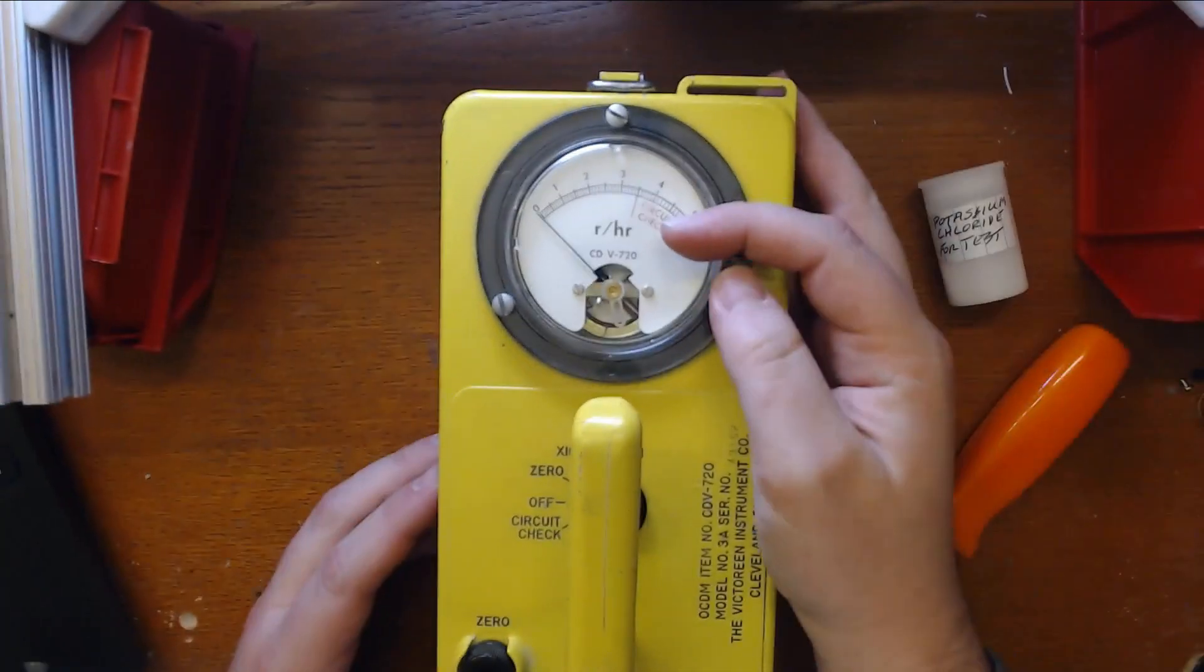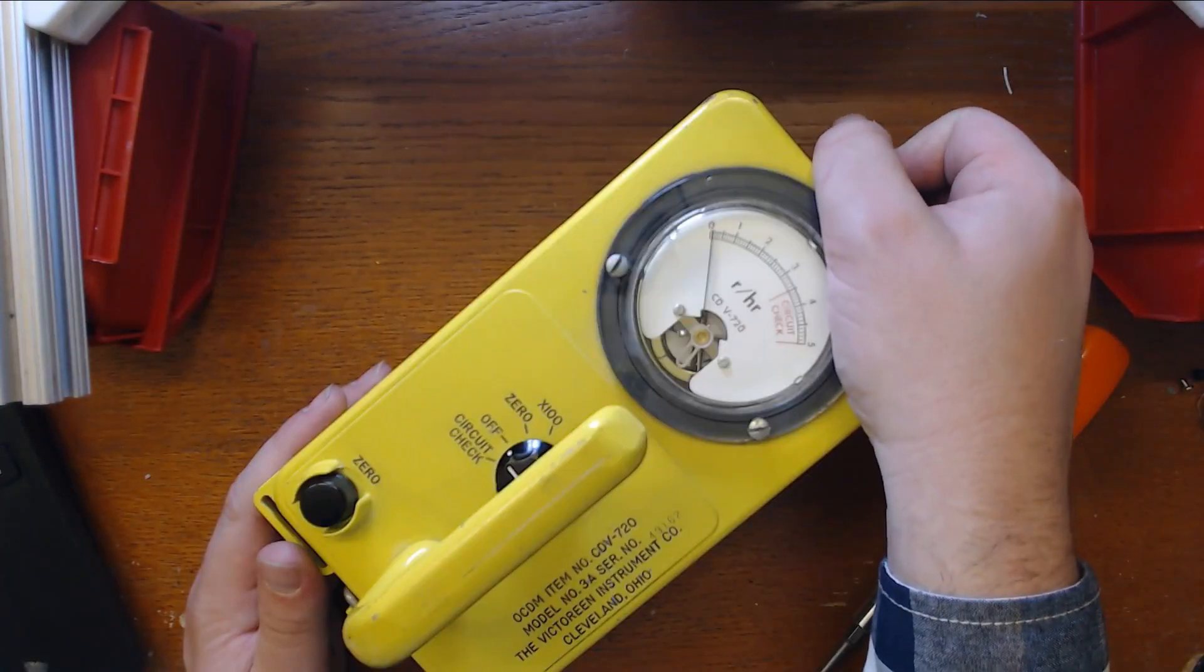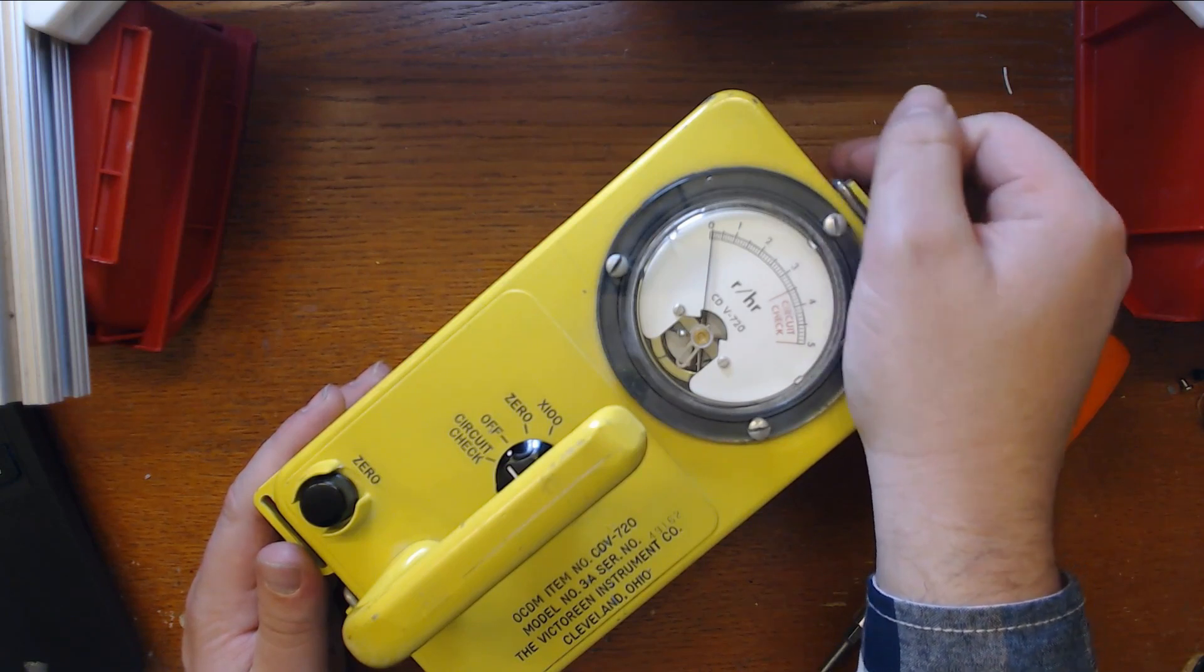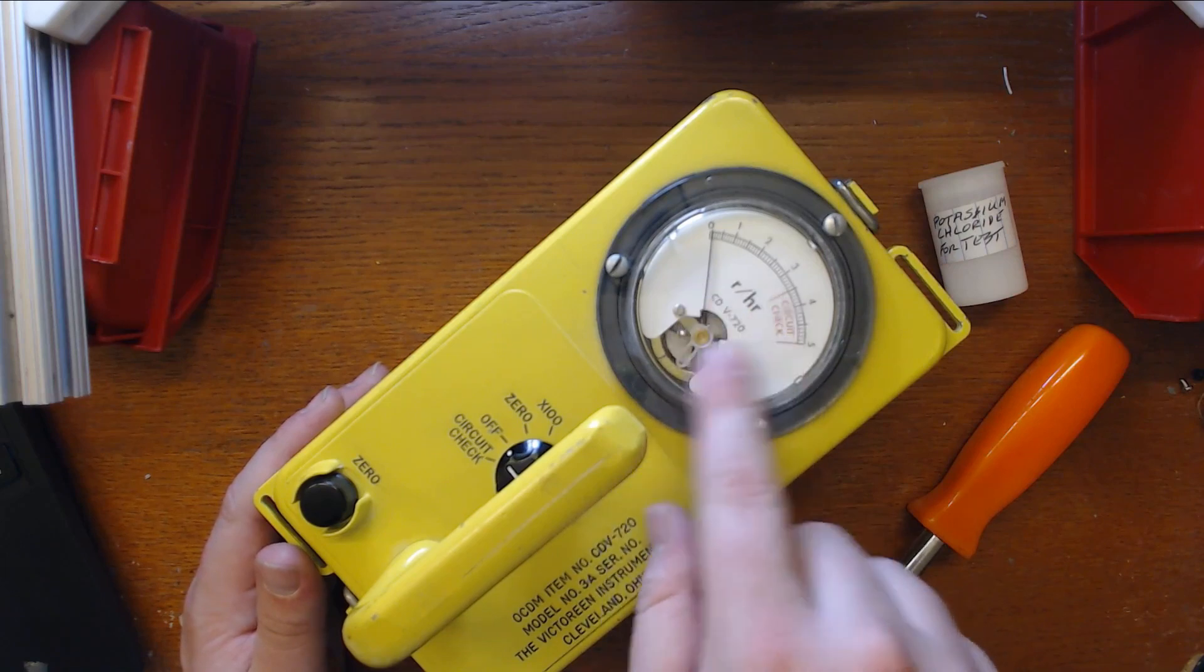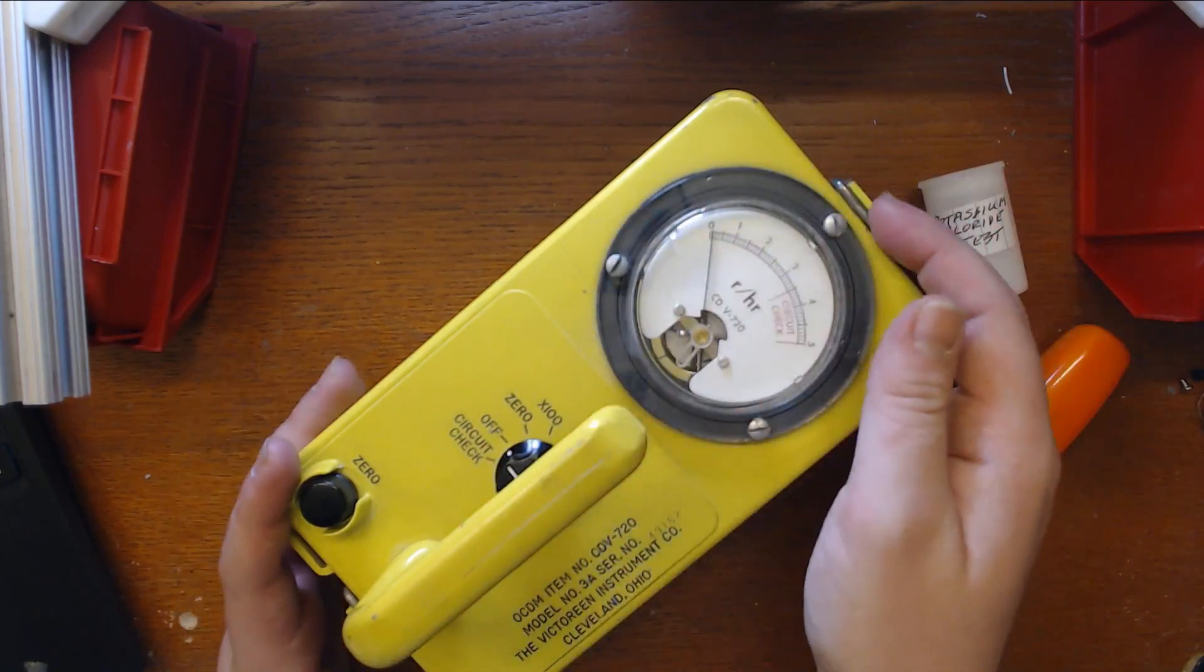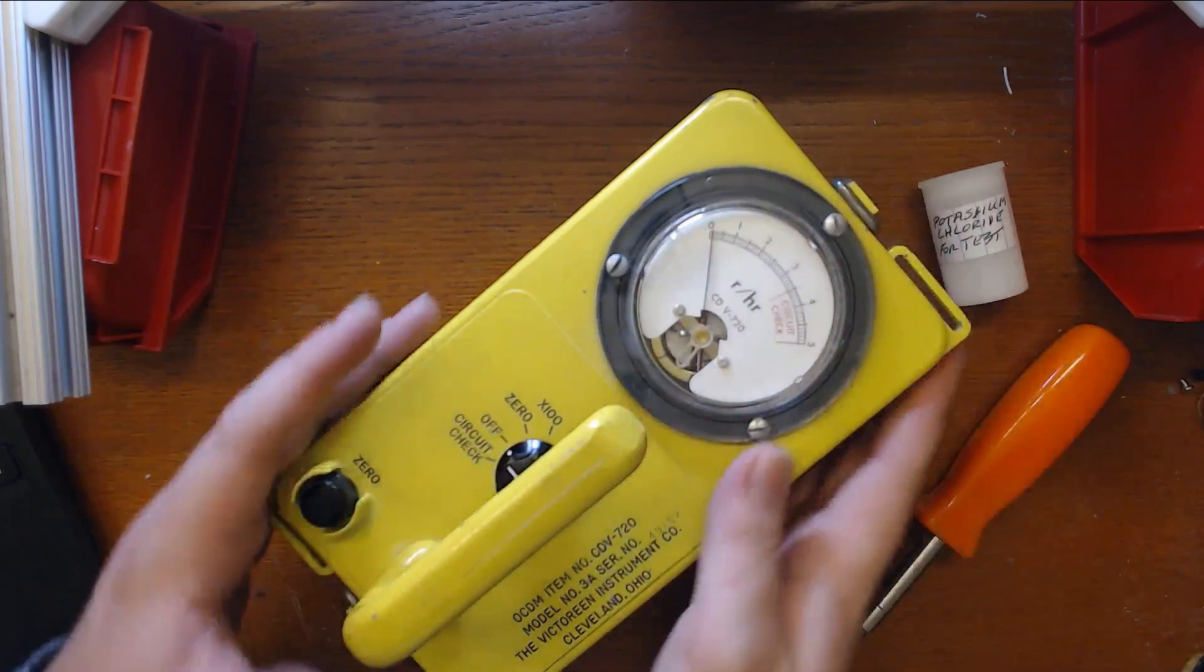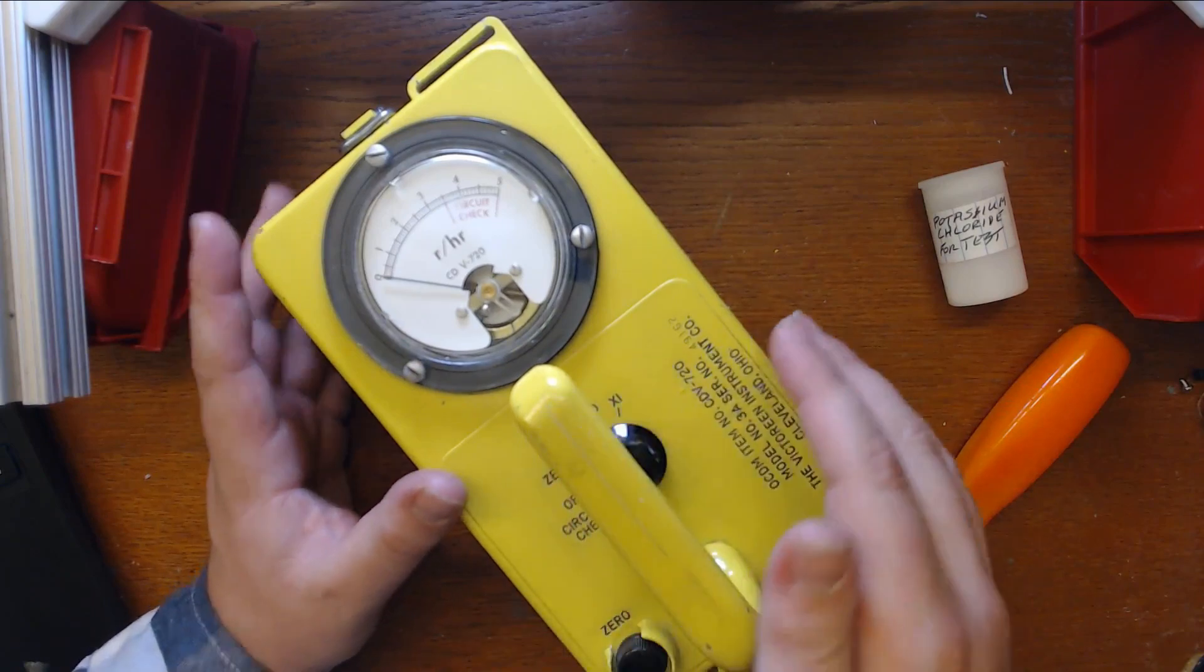This meter is in Roentgen's per hour. A Roentgen is about one sievert, let's say. So anything above 400 on this meter, anything above 4 in the 100 scale is pretty much instant sickness, possibly death. So this is a pretty intense meter. This is meant to, if there is a nuclear strike near your abode, you can evaluate the danger pretty quickly.